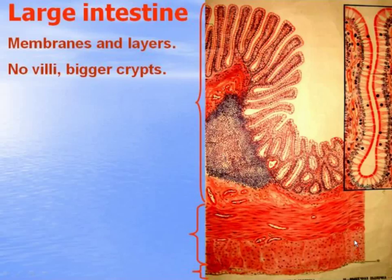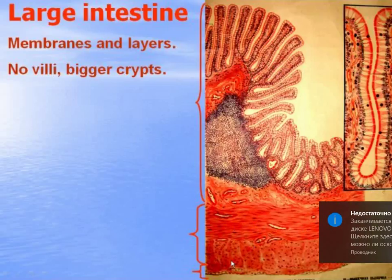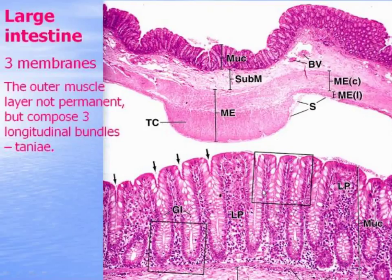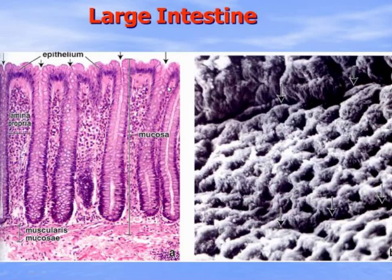The muscle membrane consists of inner circular and outer longitudinal layers, but the outer muscle layer is not permanent — it composes three longitudinal bundles called teniae coli. Here you can see the mucosa membrane, muscle membrane, and serosa membrane. In the crypts of the large intestine you can see the entrance into the crypts under the scanning electron microscope. Living here in the crypts are billions of bacteria in symbiosis with the human body.